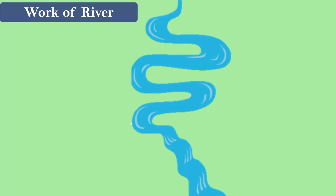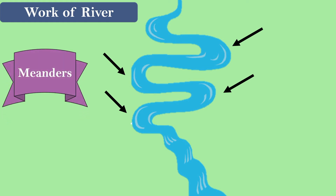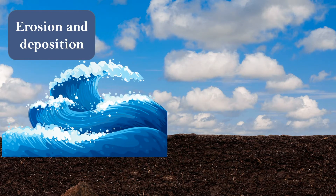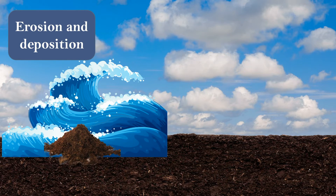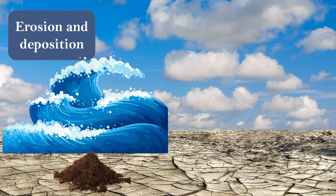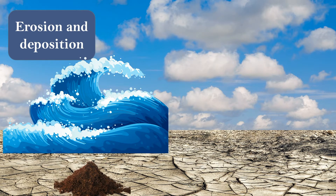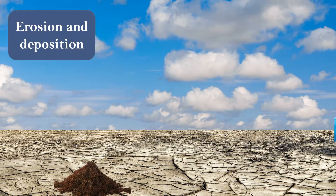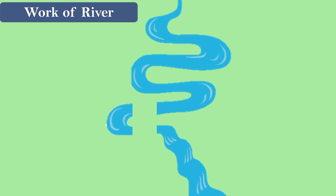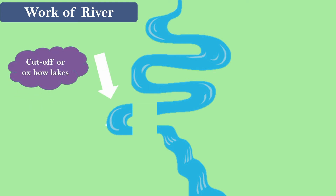When a river enters a plain, it creates little bends called meanders. As the river flows, it collects bits of sand and silt in its path and deposits them when it reaches barren lands or other places. Because of this continuous process, a part of the meander is cut off, forming lakes. These lakes are called cut-off or oxbow lakes.